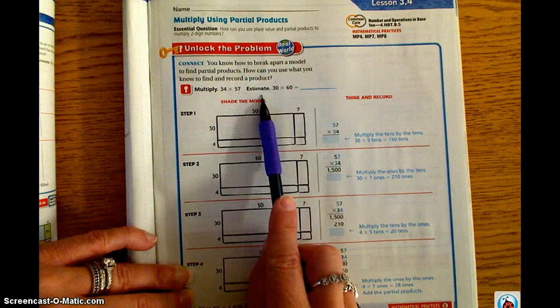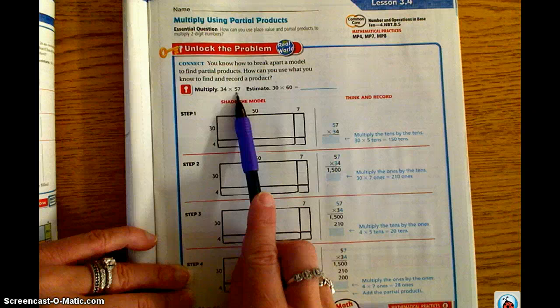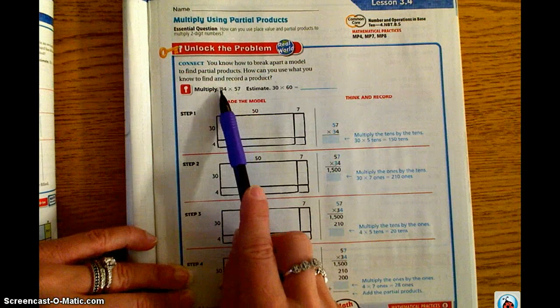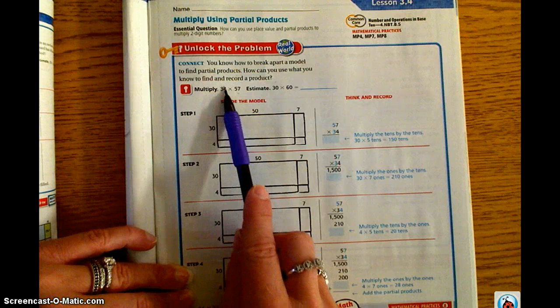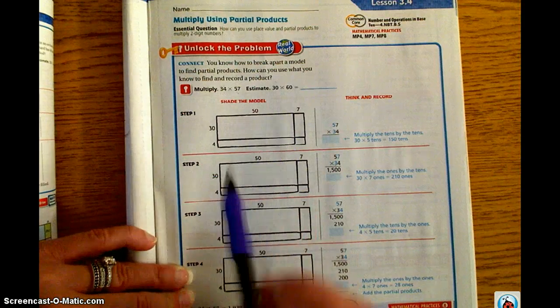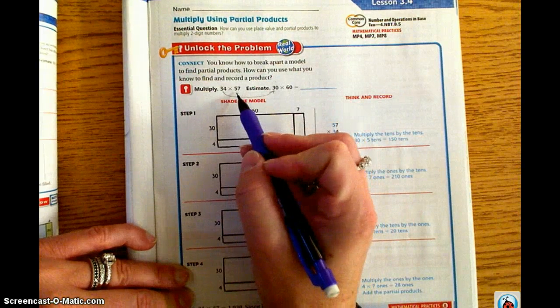We are first going to estimate, and our estimate is 30 and 60. So we know that with estimation, if we take the first number, we look next door. If it's five or more, we're going to go up. If it's less than five, our number stays the same. Hence the reason we came up with the 30.